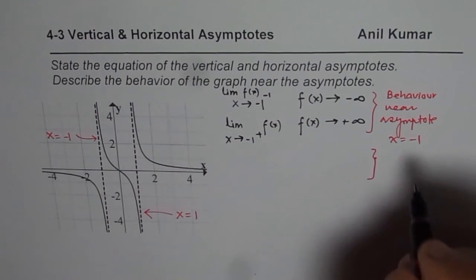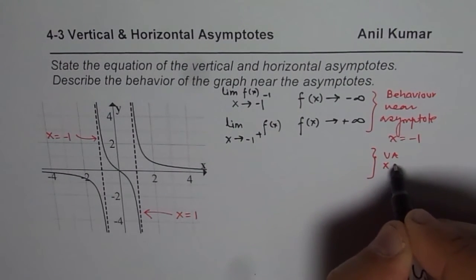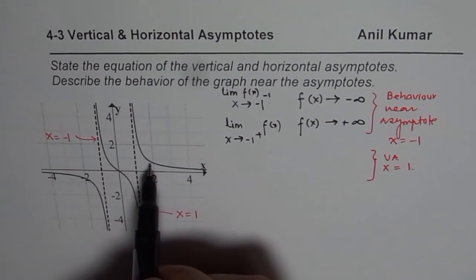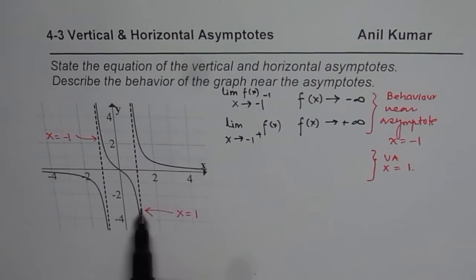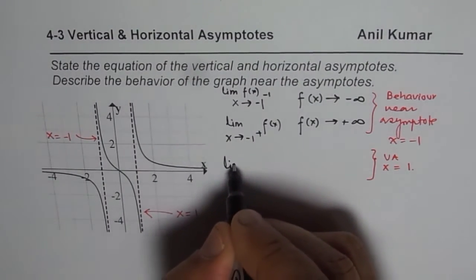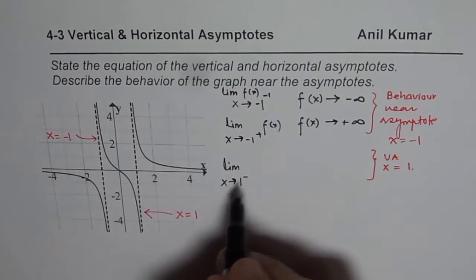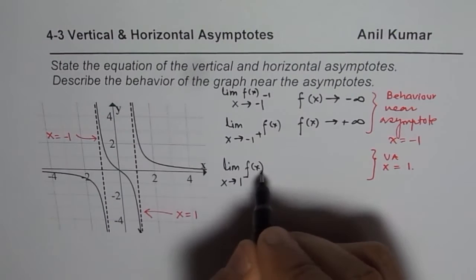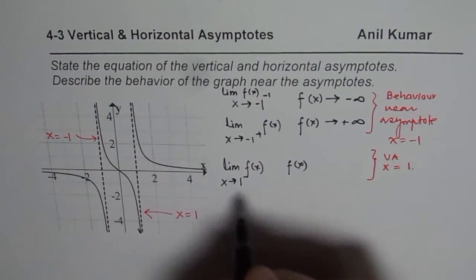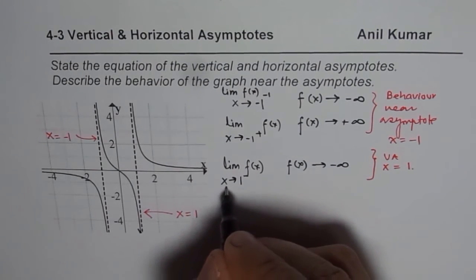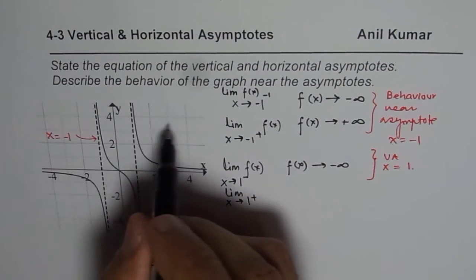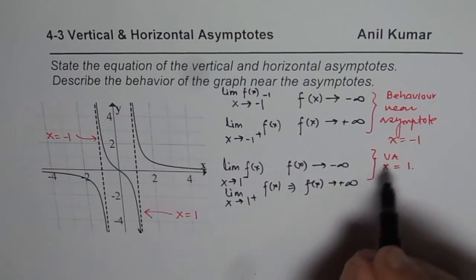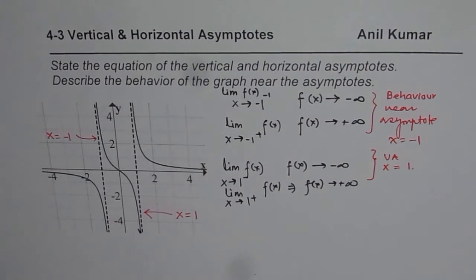Similarly, we describe the behavior near the vertical asymptote x equals plus 1. We see how the graph behaves as you approach the vertical asymptote from the left side and from the right side. In limit language: the limit as x approaches 1 from the left side — the function approaches negative infinity, you can see it going down. And the limit as x approaches 1 from the right side — f(x) approaches positive infinity. That is the behavior of the graph near its vertical asymptote.